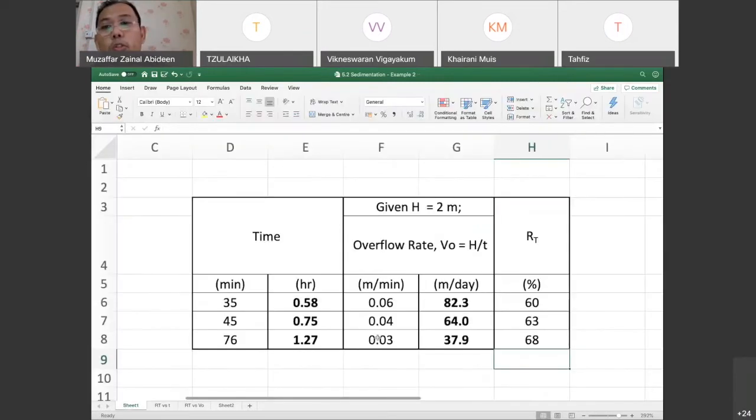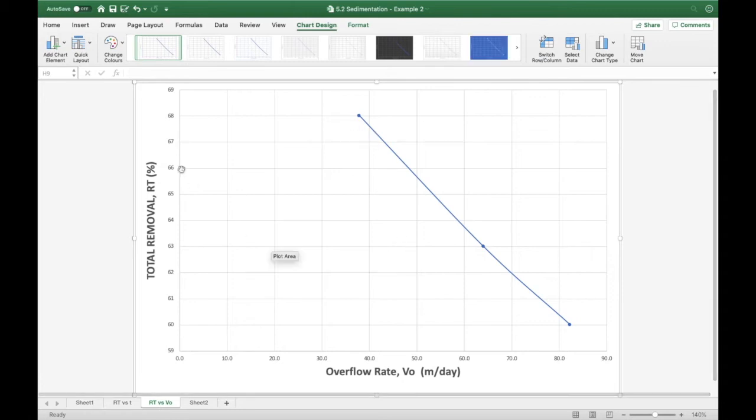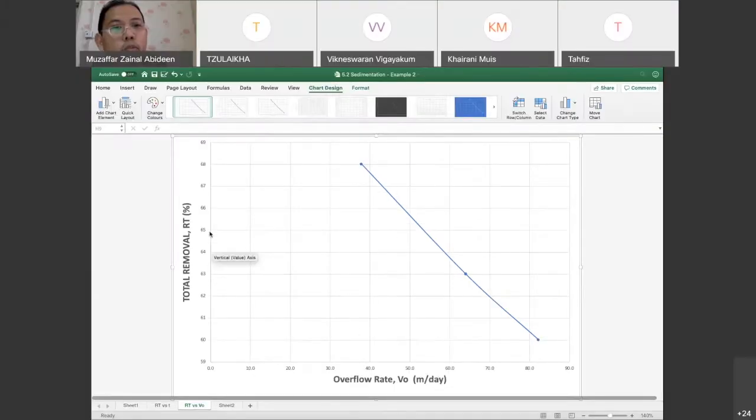We also have to plot another line, RT against the V0. I've already got the result like this. This is the RT, this is the V0. They say that they want to see the 65% removal. Look at your 65% there, bring it here. The V0 is actually a little bit more than 50, something like perhaps 52 or something.